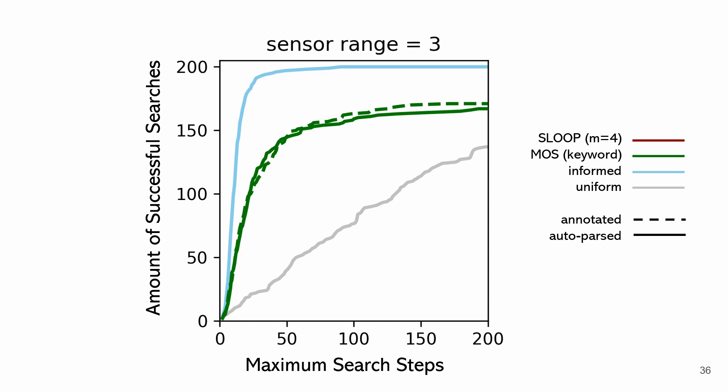Our spatial language understanding model does not depend on our particular parsing method, so we also report object search performance on manually annotated language descriptions. Using annotated language brings a small improvement to the keyword baseline. SLOOP outperforms both the automatically parsed and annotated keyword baselines, indicating the benefit of interpreting spatial language using our approach. It leads to successful search in roughly 20 additional trials compared to the keyword baselines within 100 steps. If the spatial language is parsed correctly, our method can achieve faster and more successful search results.